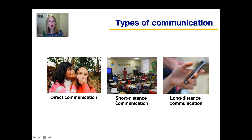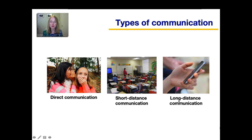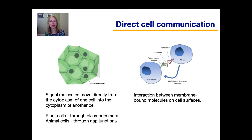Imagine you were in class and you wanted to give a message to a friend. If your friend was sitting right next to you, you could do direct communication by whispering the message in your friend's ear. If your friend was sitting further away, you could do short distance communication by passing a note. If your friend was in a different room or even a different building, you could do long distance communication such as by sending a text message using your phone. So now we will talk about how cells engage in direct, short distance, and long distance communication.